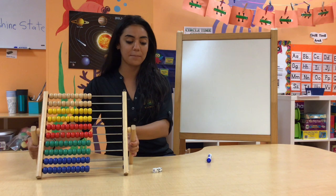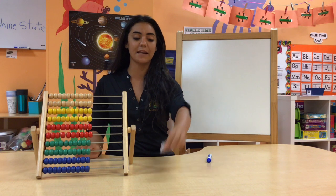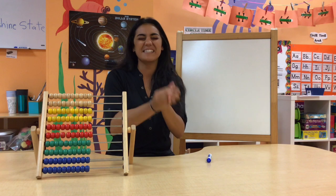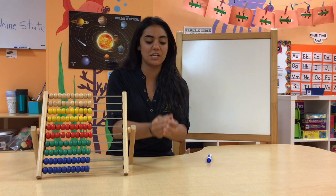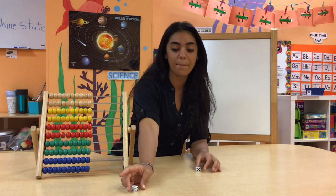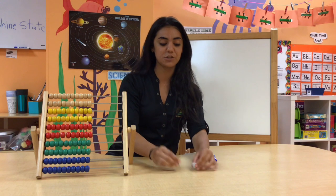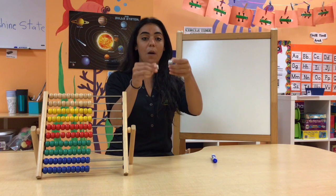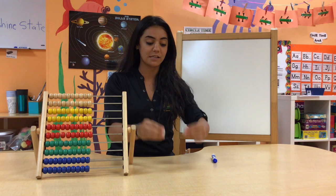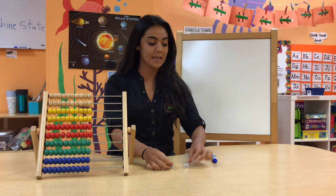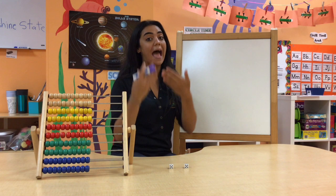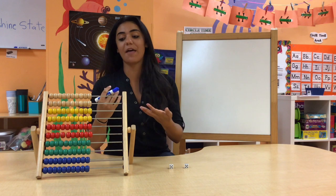So I'm using my classroom manipulatives and the first thing I'm going to do is roll my dice. I take it in, shake it, and when they drop, I grab the two numbers that show up. These are going to be my add-ins — the numbers that we are going to add together.